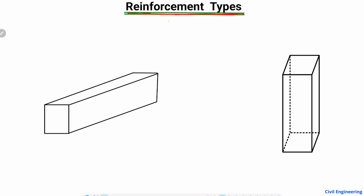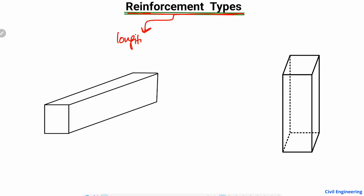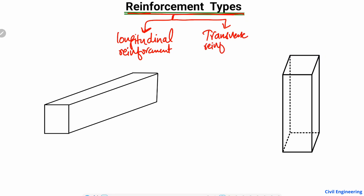I'm going to explain this topic with the help of examples to make it easy to understand. There are basically two types of reinforcement used: the first is longitudinal reinforcement, and the second type is transverse reinforcement. These reinforcements also have different technical names when they are used in beams or columns, but their main technical names are longitudinal reinforcement and transverse reinforcement.